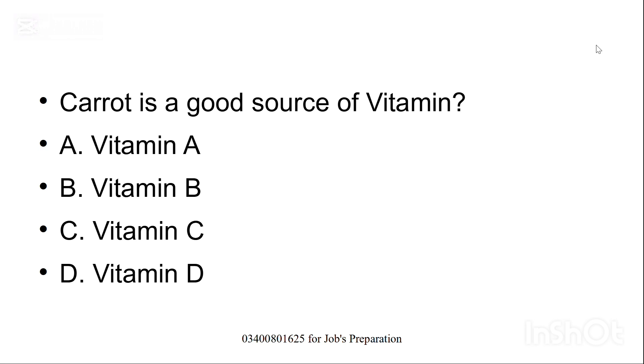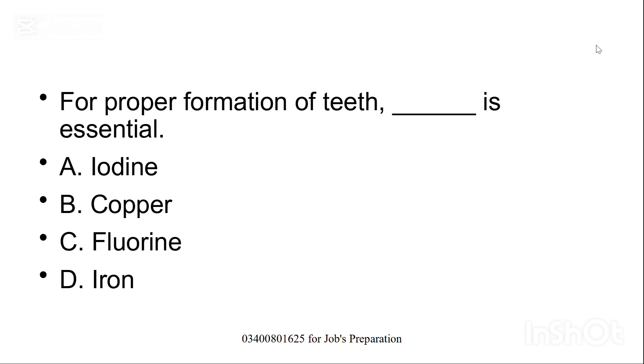Carrot is a good source of which vitamin? Option A: vitamin A, option B: vitamin B, option C: vitamin C, option D: vitamin D. Option A, vitamin A is the correct option. For proper formation of teeth, dash is essential. Fluorine is essential. Option C is the correct option.